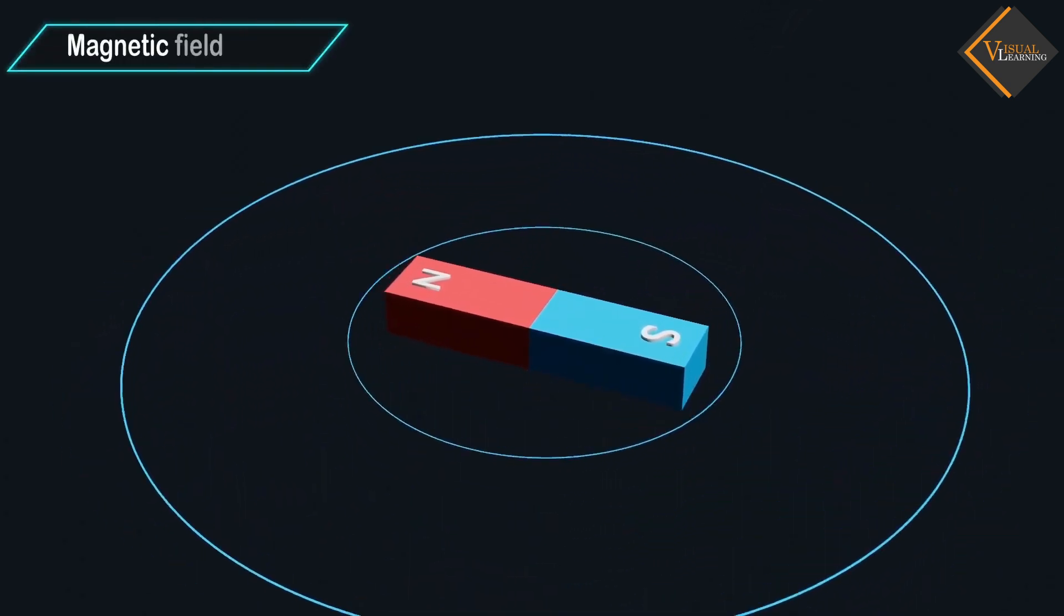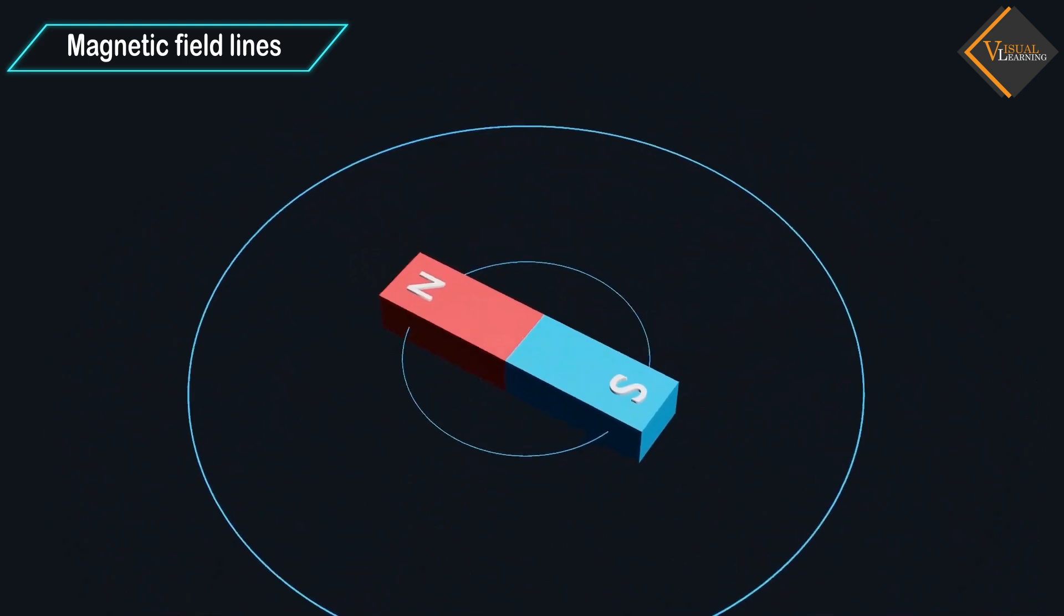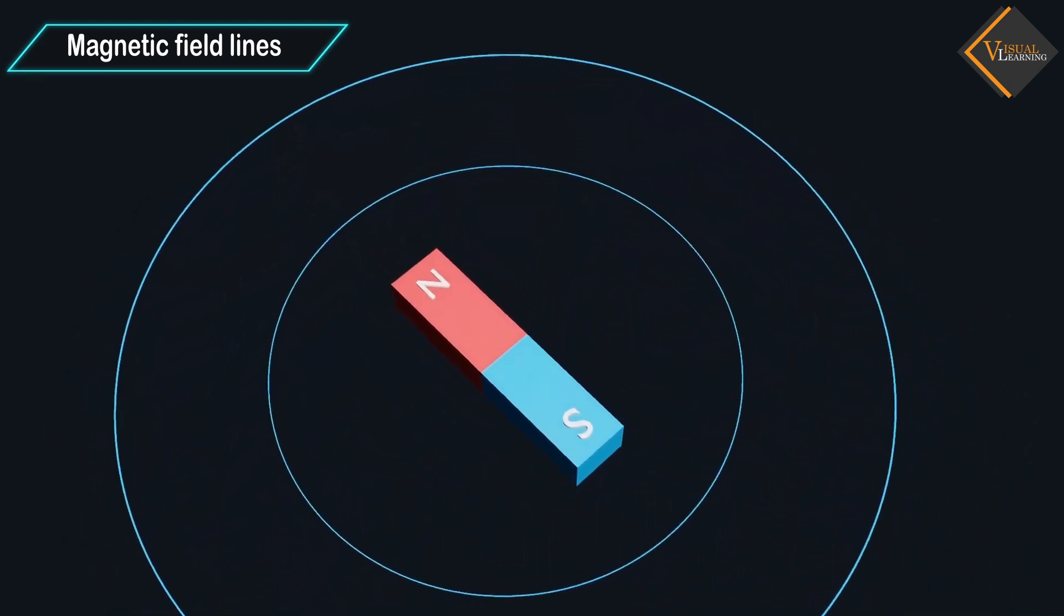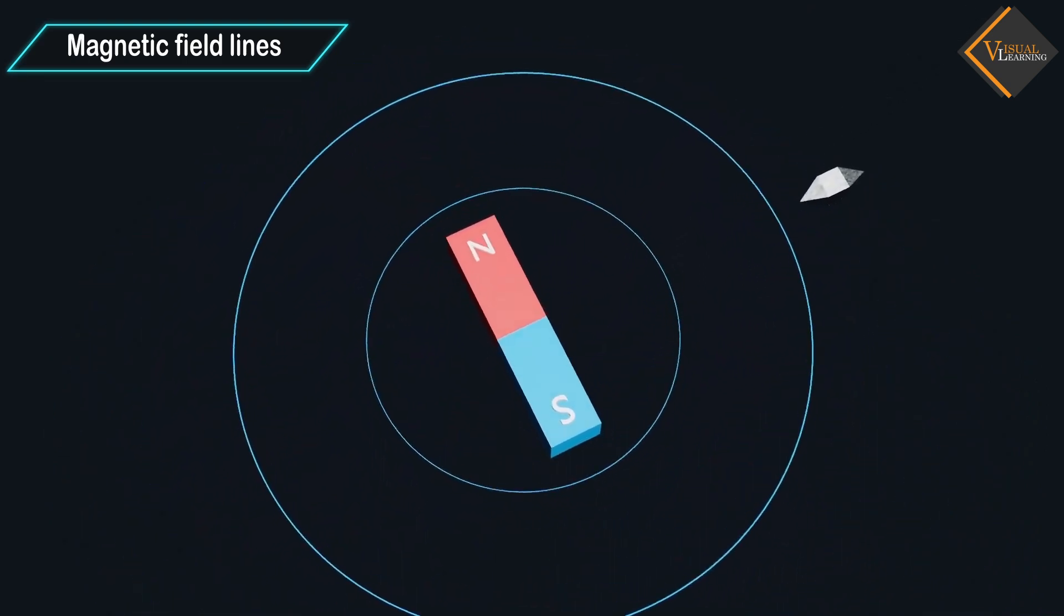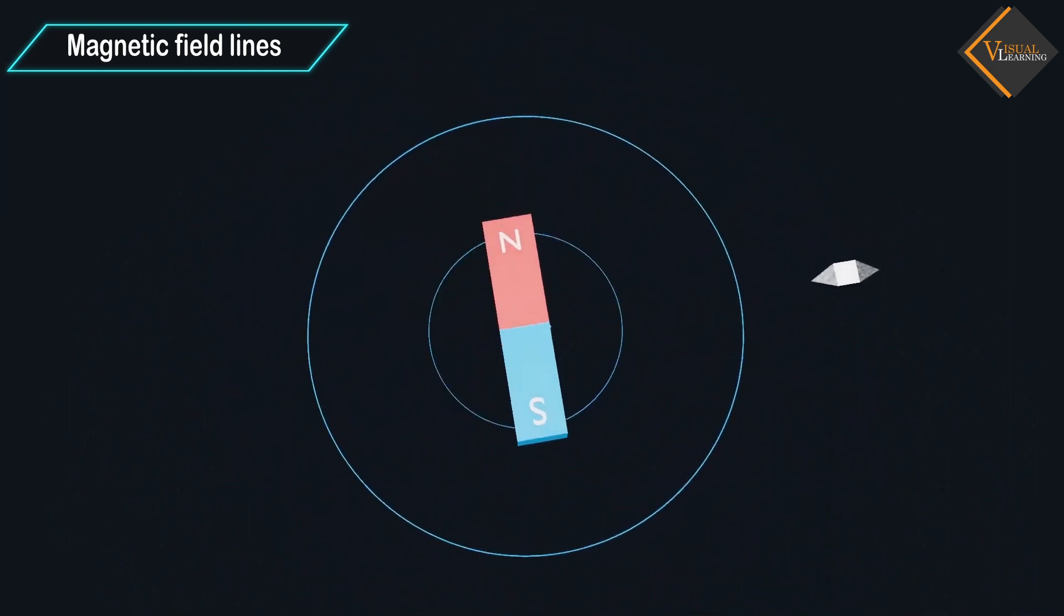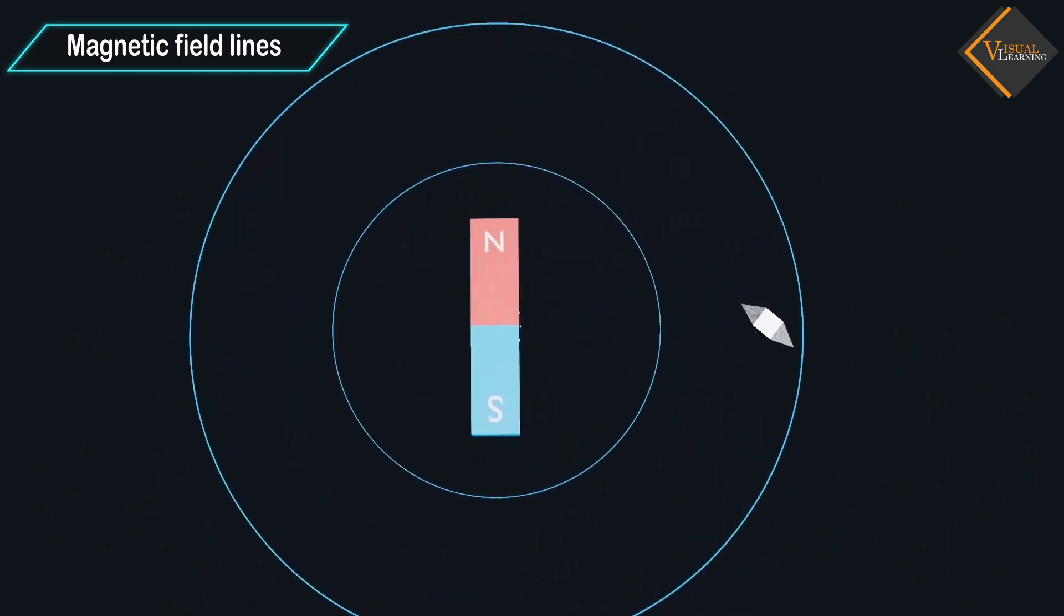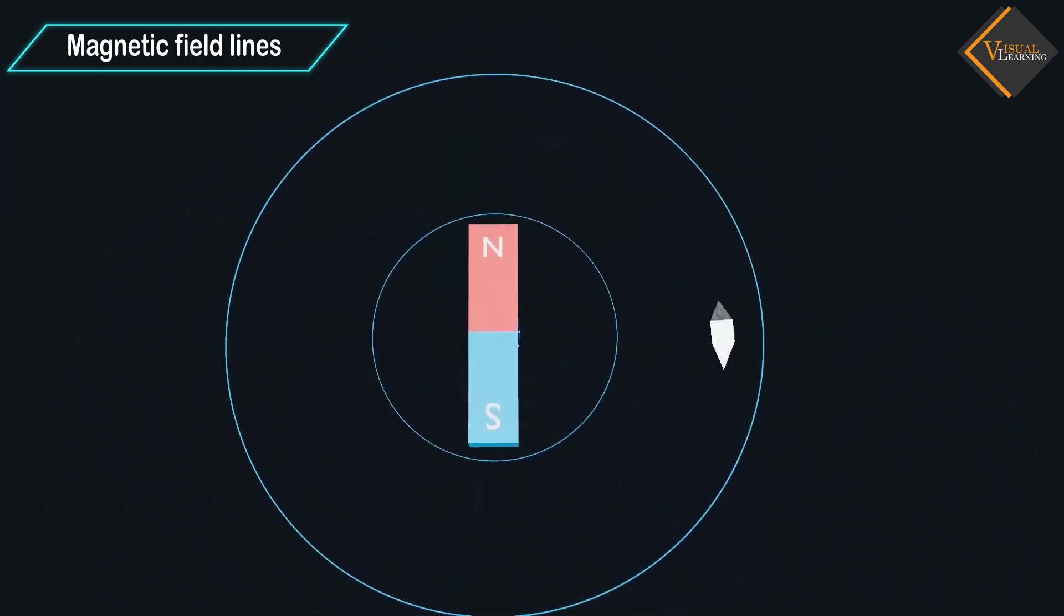Now, let's understand magnetic field lines. As we know, when we put a piece of iron around a bar magnet, it gets attracted and aligns in a particular direction under the influence of magnetic field.